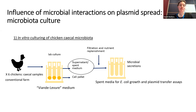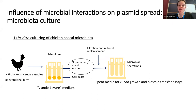We grew up replicate cultures in this medium in the lab, then spun down the cultures to collect the cell pellets of whichever microbes had grown from these gut samples, and collected the supernatant — the spent medium from these cultures — which would contain any secreted products from the microbes. We filtered this, and by replenishing all nutrients by mixing with fresh medium, we could use this as a new type of medium to test the role of microbial secretions on plasmid transfer.